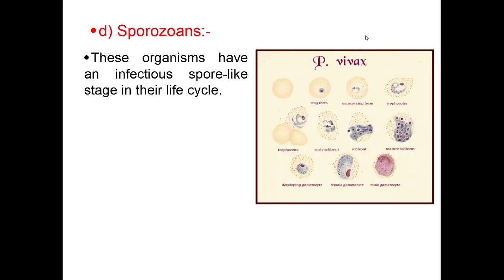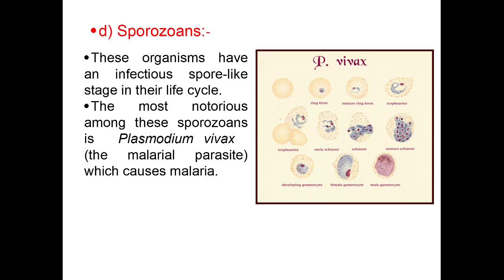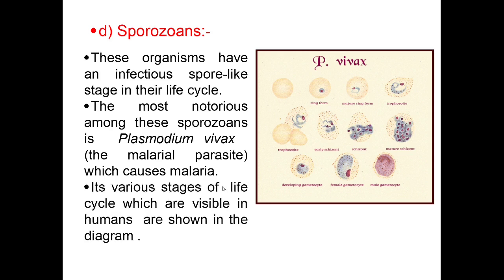The last group is sporozoans. These organisms have an infectious spore-like stage in their life cycle. The most notorious among these is Plasmodium vivax, the malarial parasite, which causes malaria. Its various stages of life cycle visible in humans are shown in a diagram, including the trophozoite, mature ring form, and schizont. With this, we complete the study of Kingdom Protista.